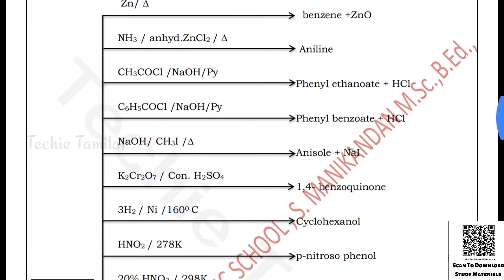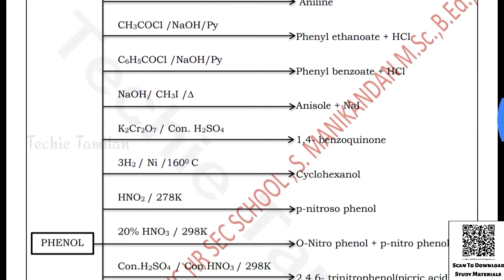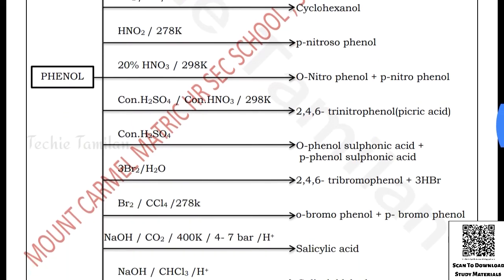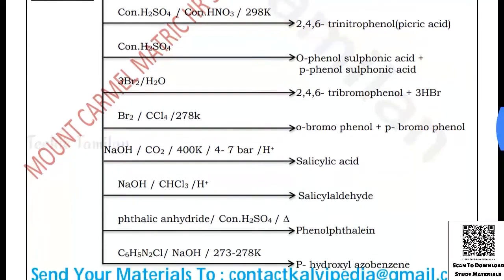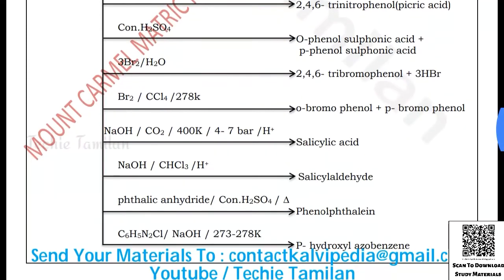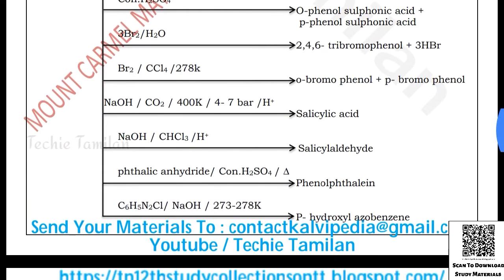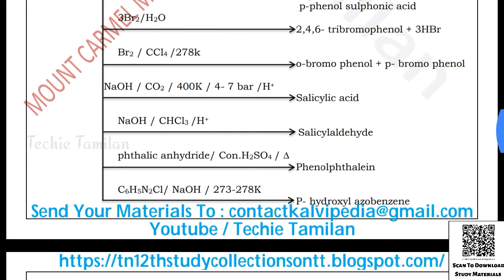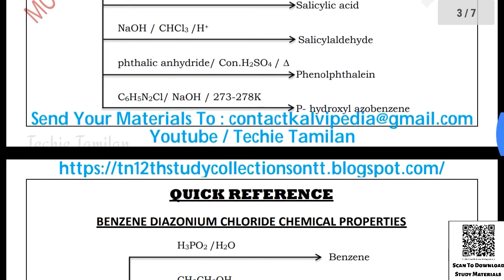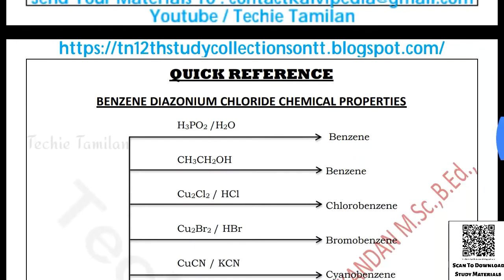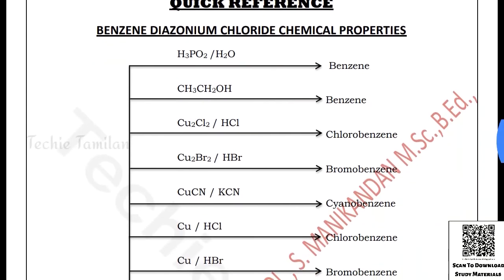So now you can mark the structure and you can see the structure and print. So if you have the structure, you can see the structure and print. Let's look at the two of them — you can add benzene diosinam chloride.